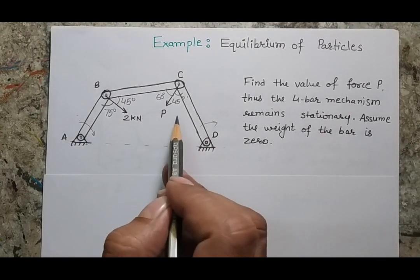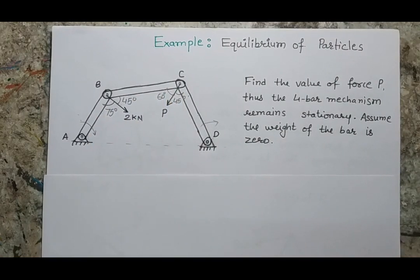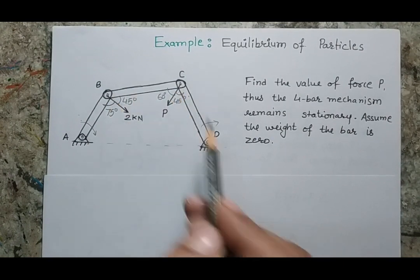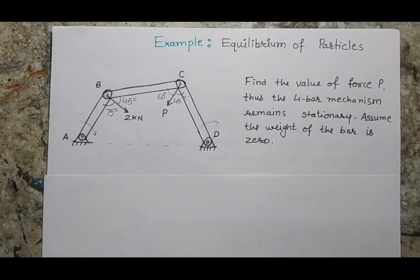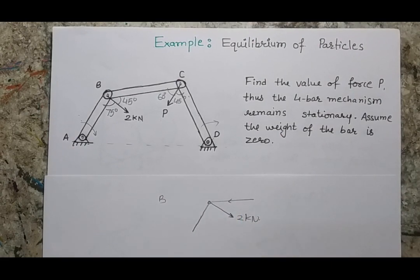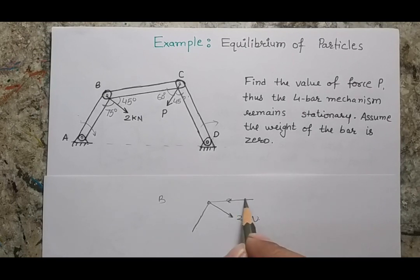There are two points — B and C. When a force is applied at point B, forces are transmitted through BC and BA; similarly, forces go from CB to CD. For the free body diagram of point B, the 2 kilonewton force is known, but forces BC and BA are unknown. We don't know if the direction of these forces is toward or away from the node. I normally consider all forces away from the nodal point — conventionally, a force away from the node is a tensile force.